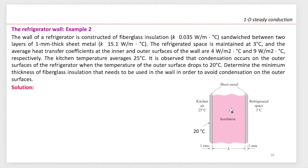So we want to know how thick — how much is this L — the fiberglass thickness to avoid condensation on the outer surface of the fridge. First of all, we realize we are dealing with a composite layer: metal, fiberglass, metal. This is a problem that should be solved with electrical analogy. When we deal with layers, we use electrical analogy.